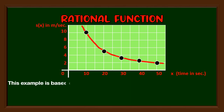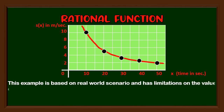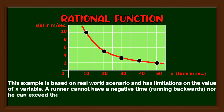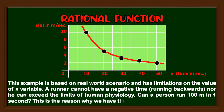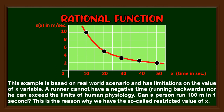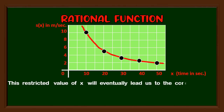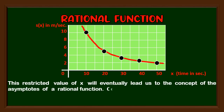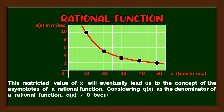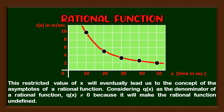This example is based on a real-world scenario and has limitations on the value of the x variable. A runner cannot have a negative time — running backwards — nor can he exceed the limits of human physiology. Can a person run 100 meters in one second? This is the reason why we have the so-called restricted value of x. This restricted value of x will eventually lead us to the concept of the asymptotes of a rational function. Since q(x) is the denominator, q(x) should not be equal to zero because it will make the rational function undefined.